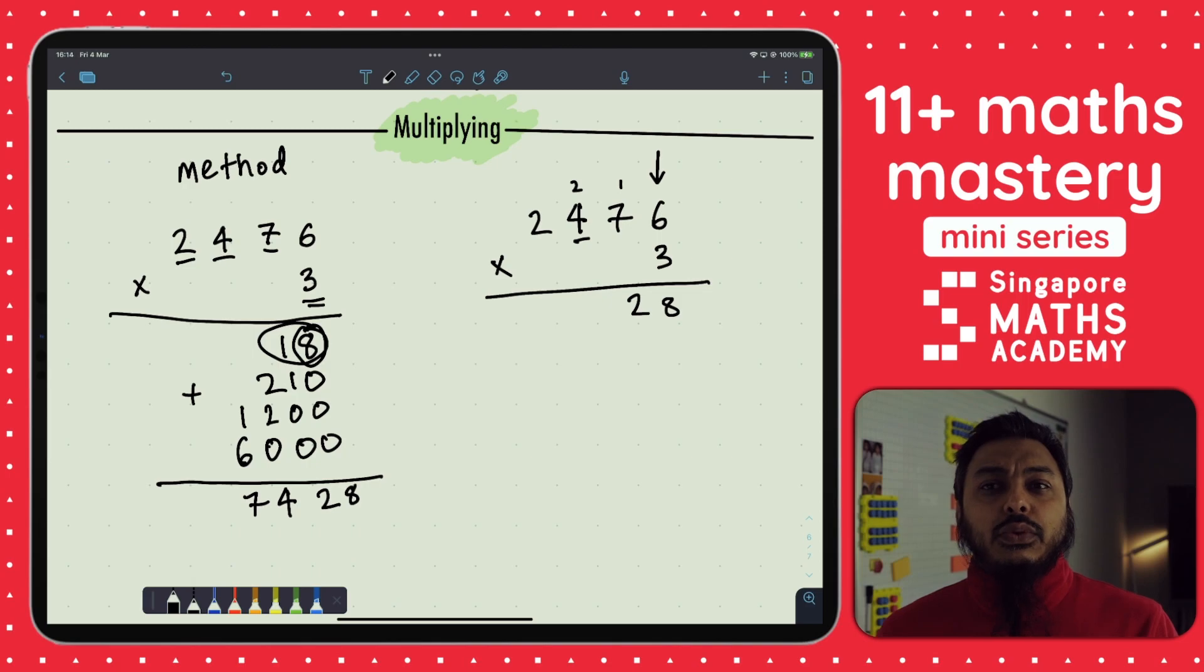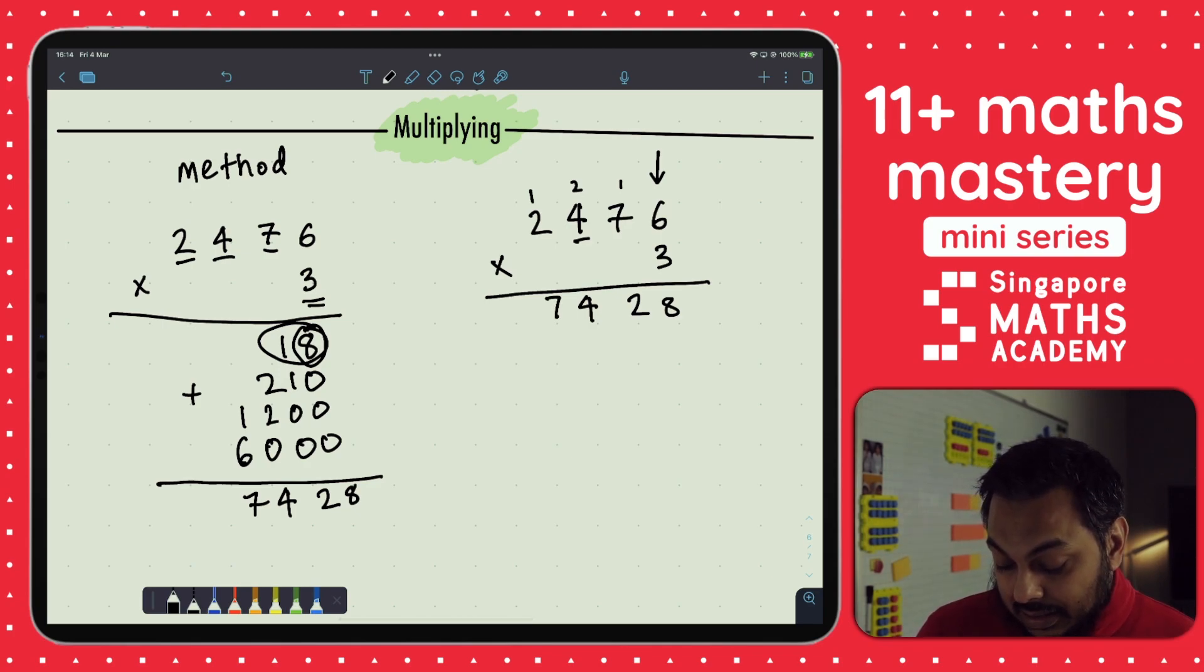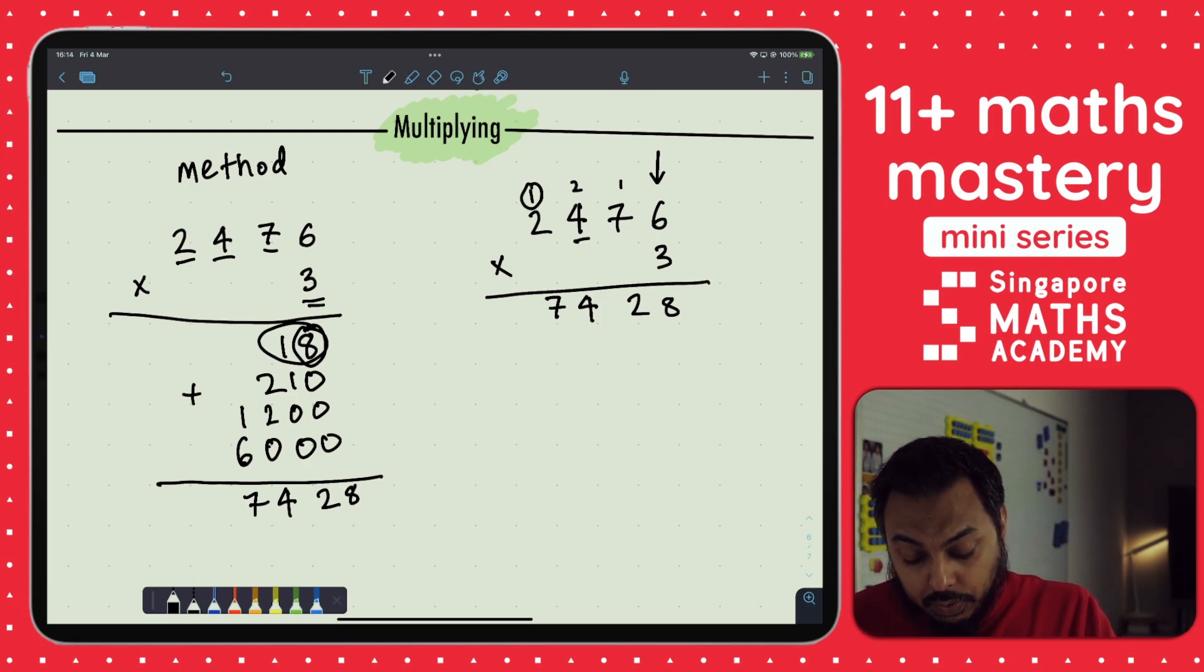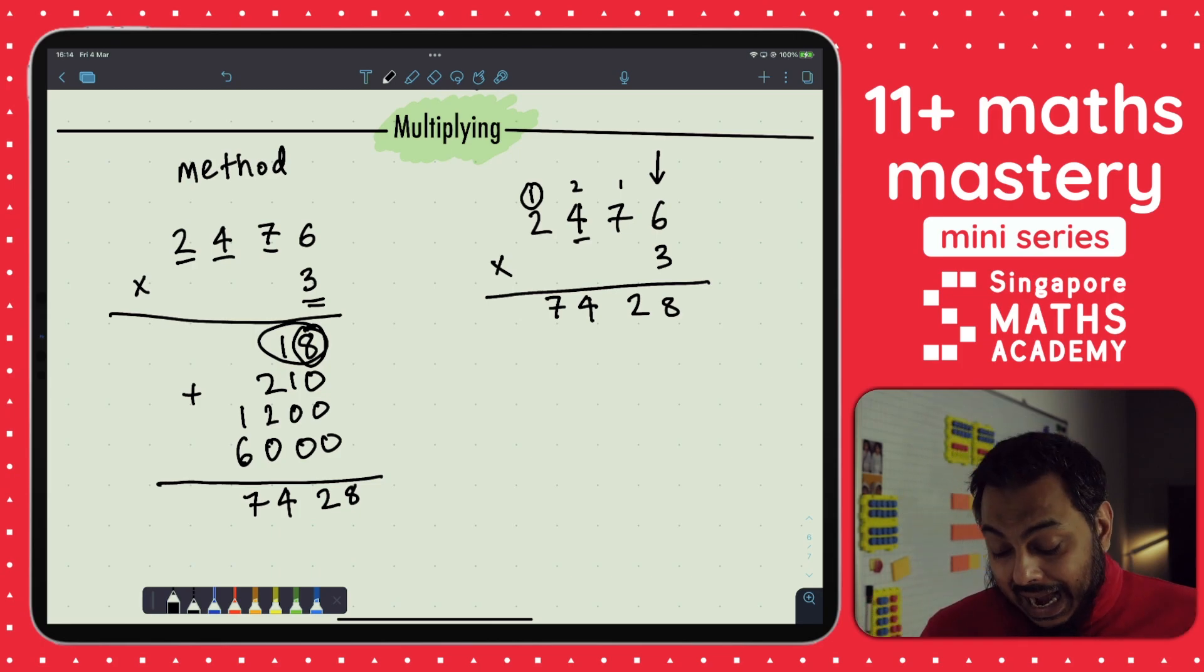400 times 3 is 1,200. 3 times 4 hundreds is going to be 12 hundreds, which is 1,200 plus the 200 would be 1,400. So I'm going to write the 400 here. 1,400 means I'm going to write the 400 there, but the 1,000 is going to go into the thousands column. So now I've got 3 times 2,000, which is 6,000, and 6,000 add the 1,000 is the 7,000 that we needed. We made an extra 1,000 from multiplying 3 times 400 and adding the 200 on. That made 1,400.